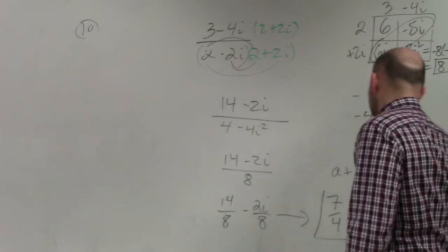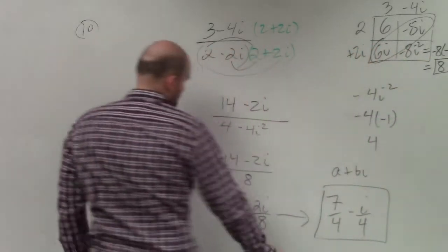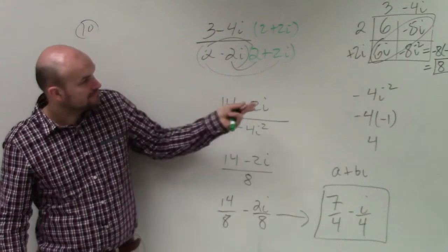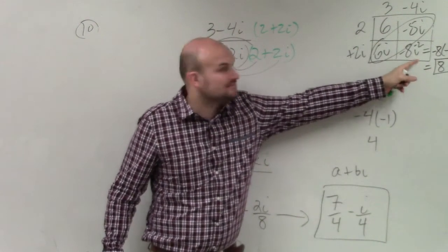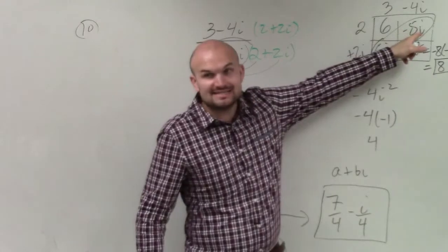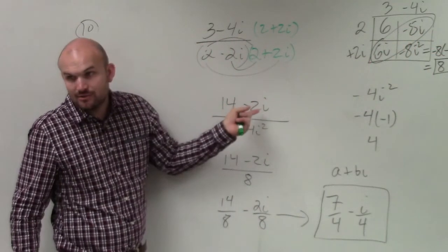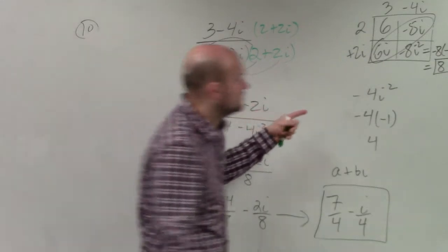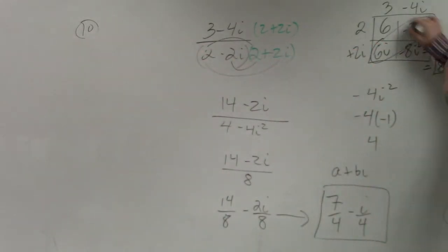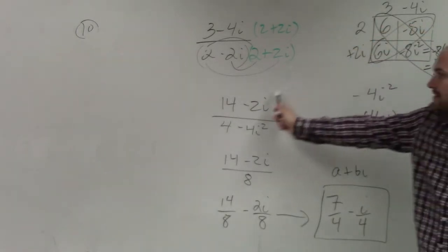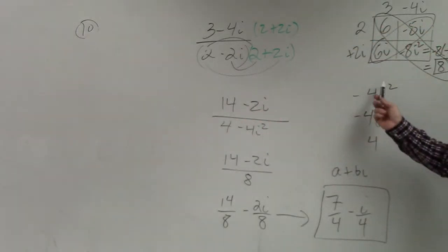So where did you get 14 minus 2i? You got negative 6 and negative 8. 6 plus 8 is 14. 6i minus 8i is negative 2i. 14 minus 2i. Yeah, that's 6 plus 8 is 14. 6i and negative 8i is negative 2i. Hold on one second. Then I did the denominators. Combine them.